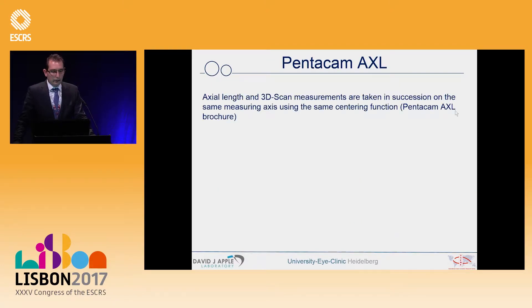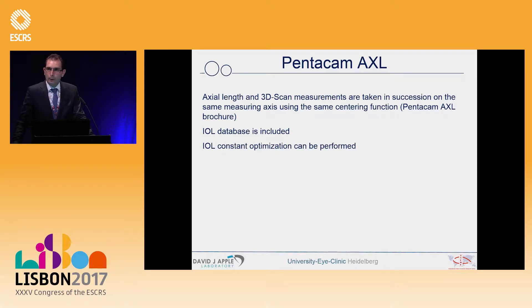The Pentacam AXL is used for axial length and 3D scan measurements, which are taken in succession on the same measuring axis using the same centering function. The complete available IOL database is included in the recent software, meaning IOL optimization can be performed on your side — you need only 50 cases for the regular formula, whereas for the Haigis formula, where the anterior chamber depth is very important, you have to add 150 cases for clear optimization of your IOL constants.